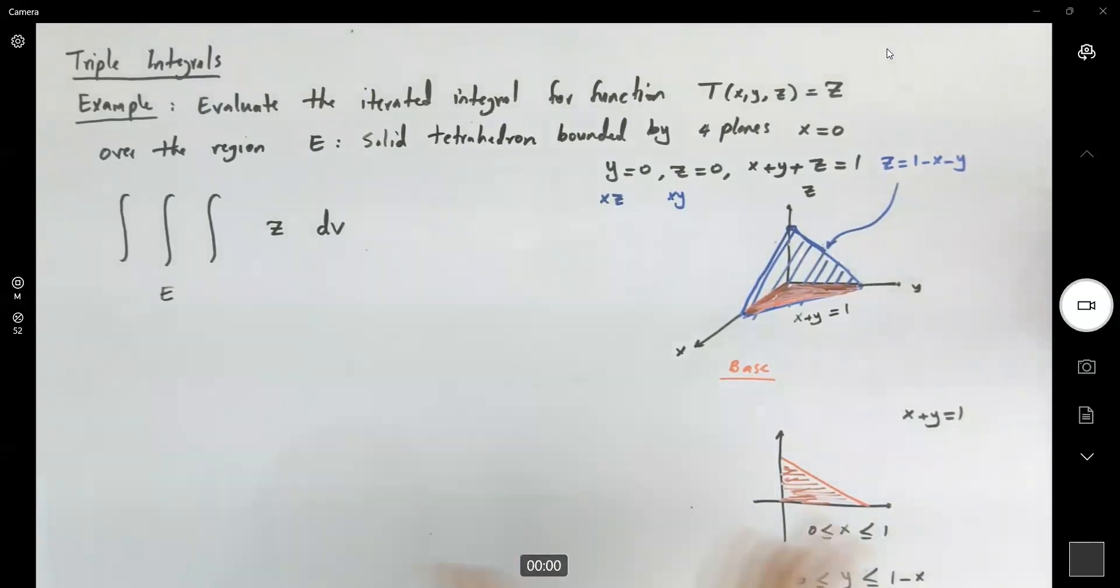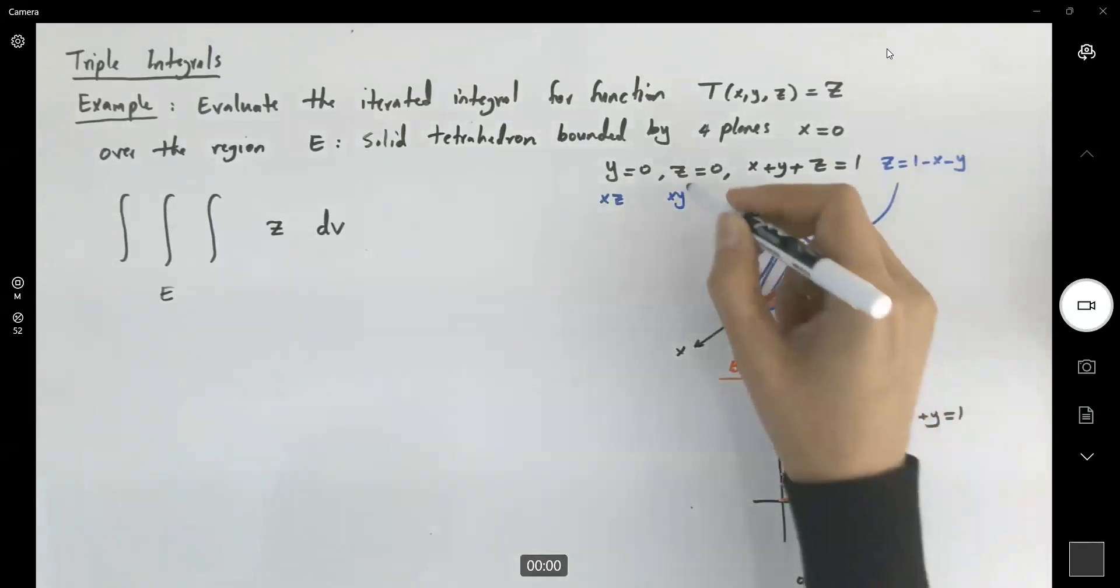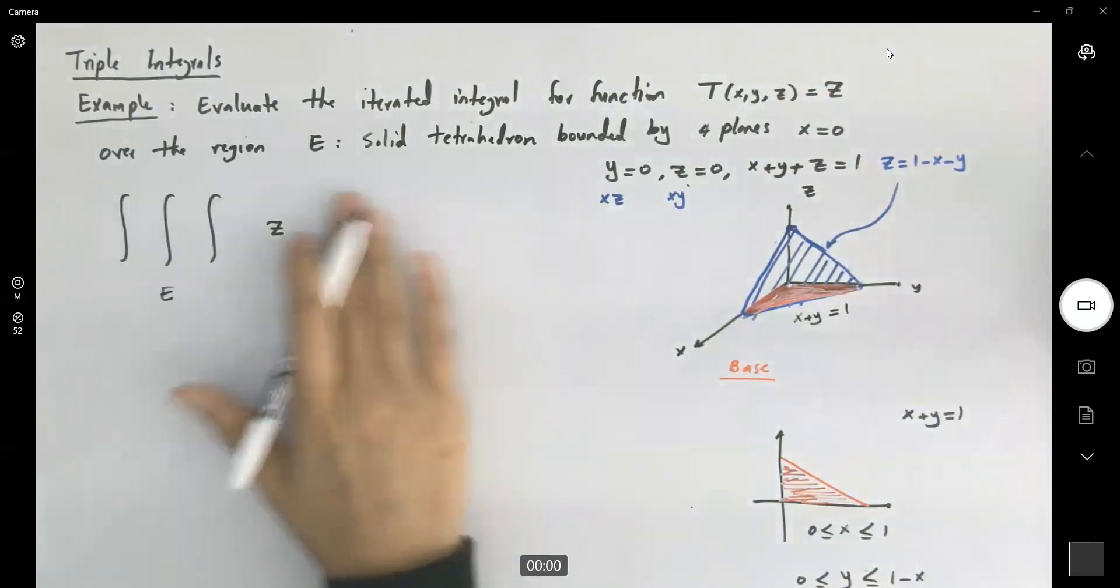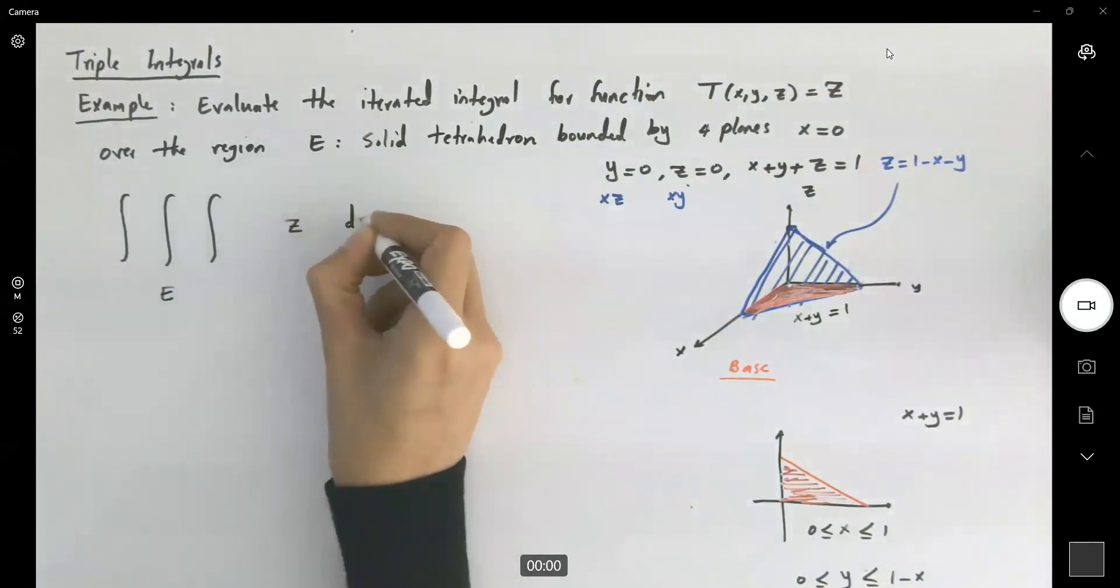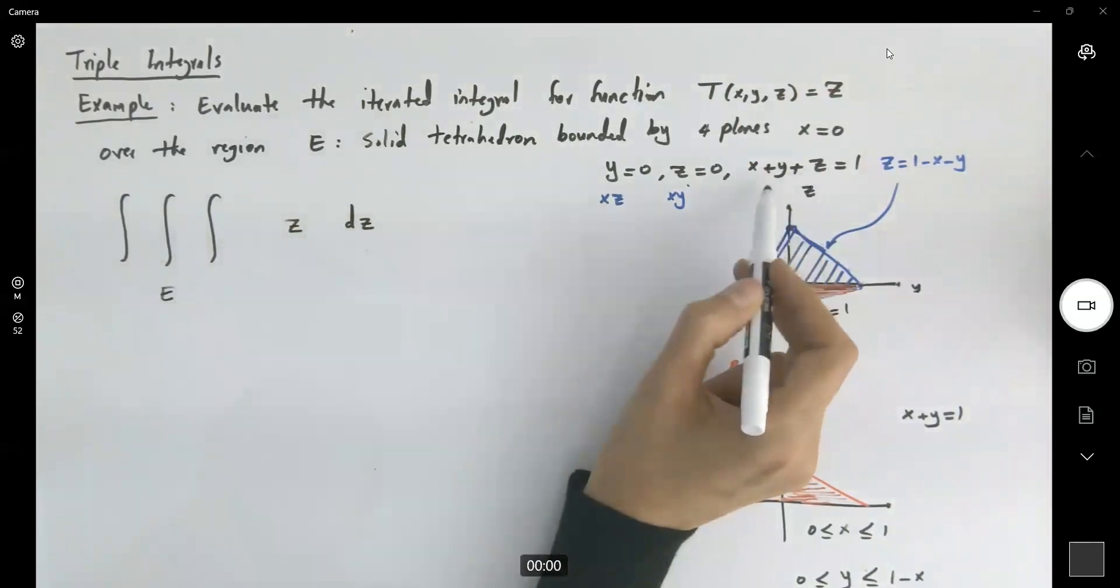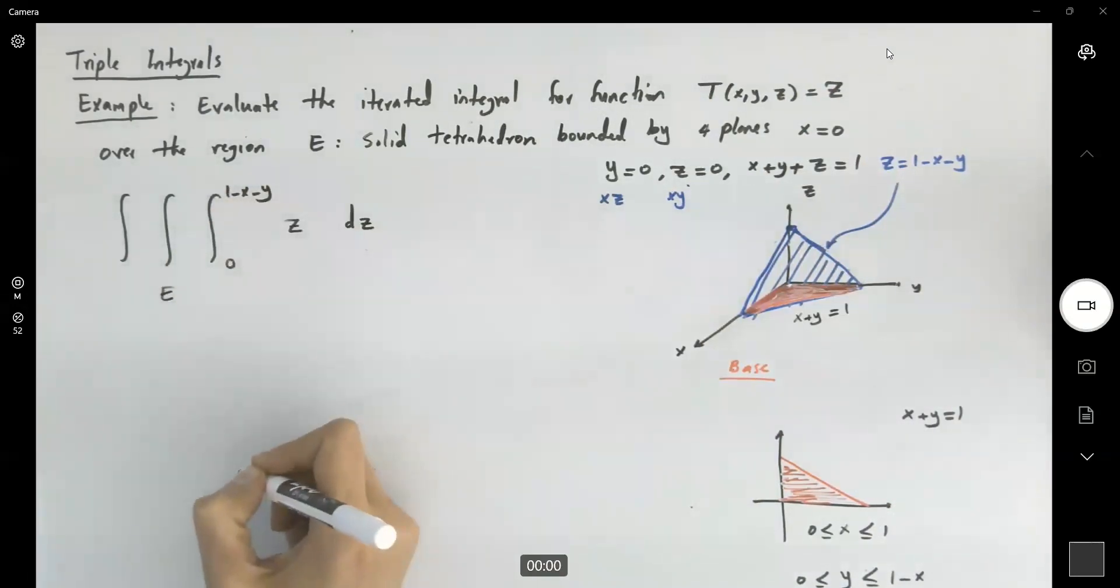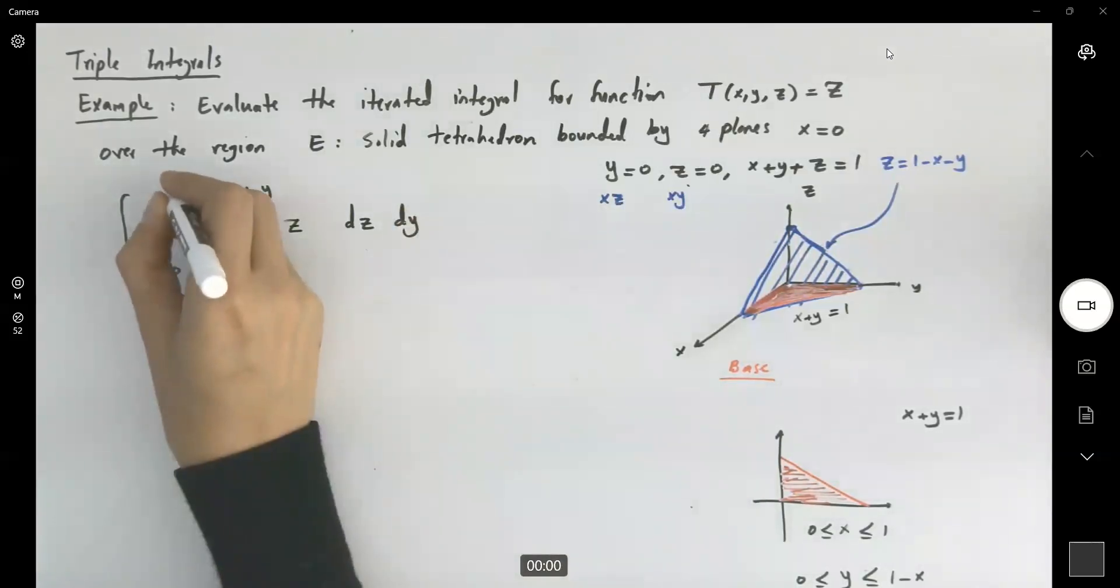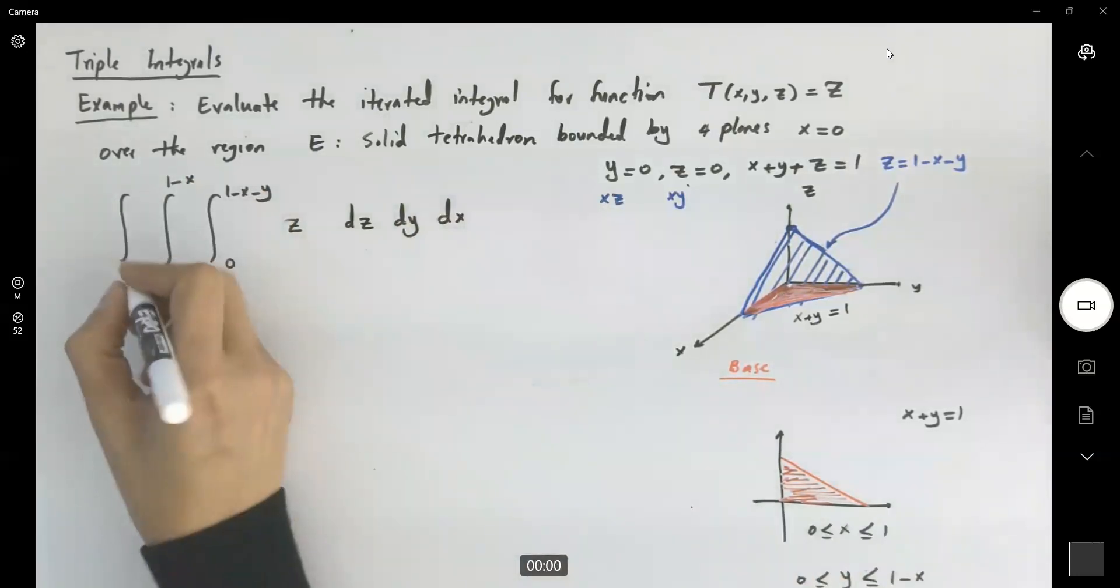So this is my base. I have everything I need to set this triple integral. x is bounded between 0 and 1, y is bounded between 0 and 1 minus x. What about my z? z from below is bounded by 0, and from above is bounded by this ceiling, which is the slanted ceiling, z equals 1 minus x minus y. I'm going to start by having the inner integral with respect to z because z depends on x and y. Then I'm going to switch to y because y is dependent on x. And finally my dx, since x is fixed between two fixed values.